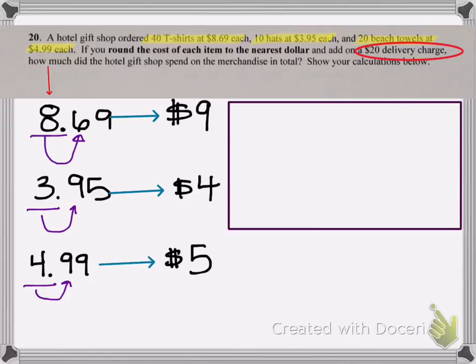I had 40 t-shirts that were about $9.00 each, so that's 40 copies of nine, plus I had 10 hats that were about $4.00 each, so that's 10 copies of four, plus 20 beach towels that were about $5.00 each, so that's 20 copies of five, plus this one-time delivery charge. So plus 20, and 20 doesn't get multiplied by anything. You could think of it as one copy of 20, which would be 1 times 20, but that's just 20.